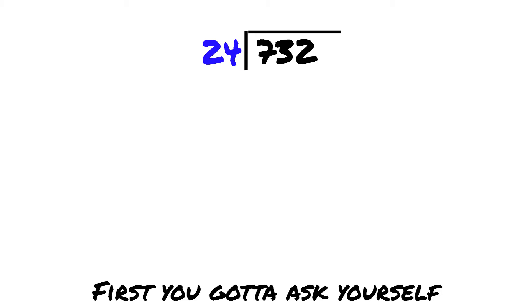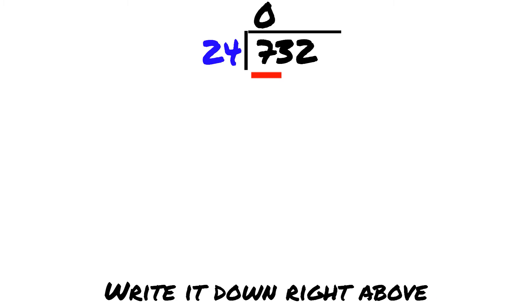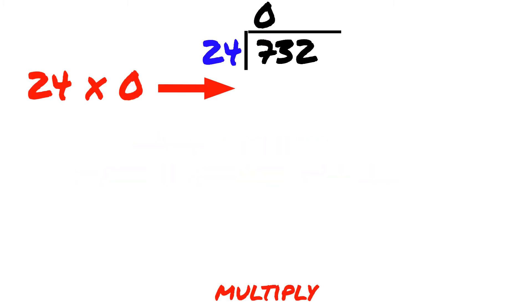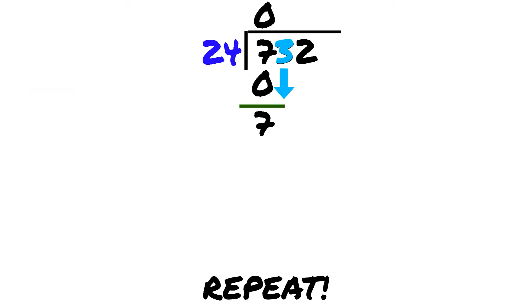Repeat, repeat, repeat. Did you bring down every digit, and if not, just repeat. Repeat until every digit in the dividend has dropped.